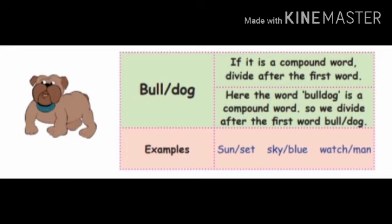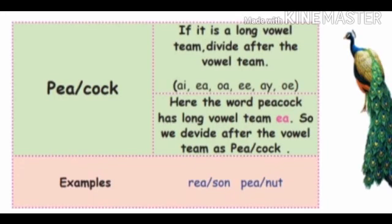The word bulldog is also a compound word, so we should divide after the first word: bull. When we get a compound word, we should divide the word after the first word. For example: sunset — divide after sun; skyblue — divide after sky; watchman — divide after watch.